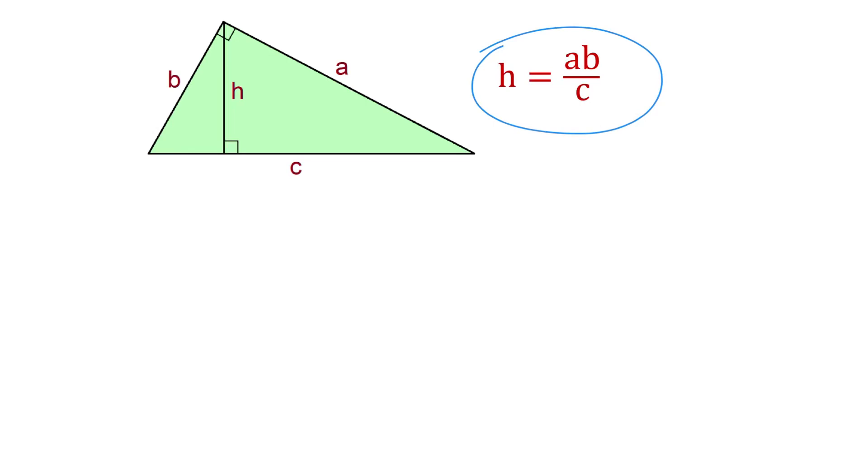Hello, did you know that if in a right triangle we are given the sides A, B and C, then we can find the height H that is perpendicular to the hypotenuse using the formula H equals A times B divided by C.